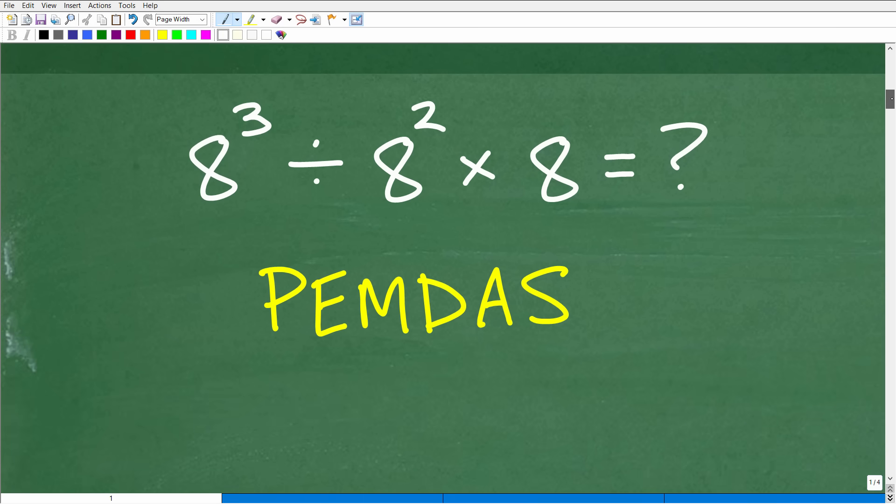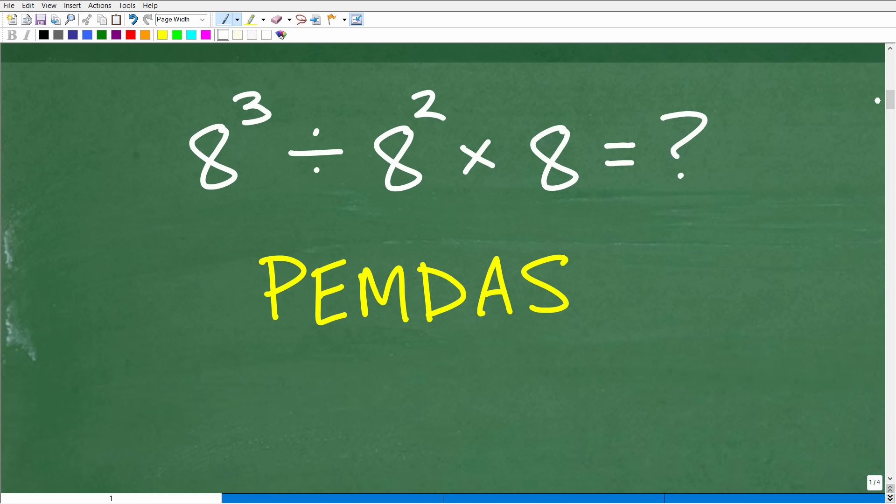So the first thing we need to discuss is the order of operations. Because here, in our problem, we have some things we need to figure out what to do first. I can think about doing division first, or maybe I could do multiplication first.